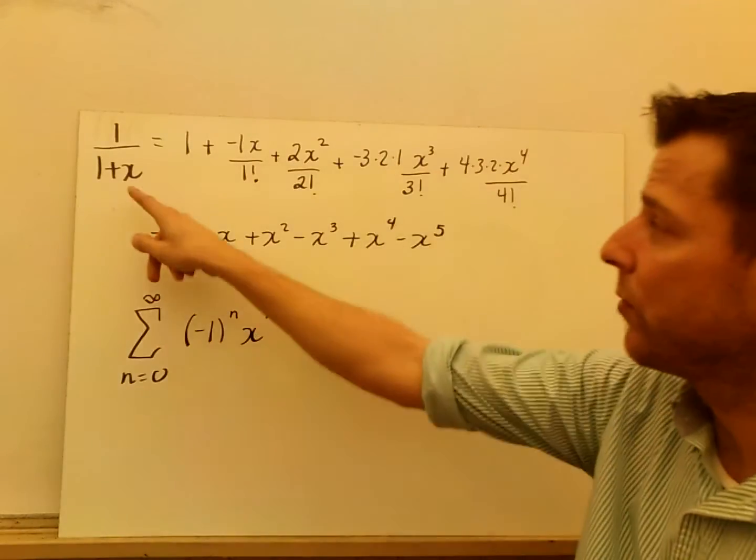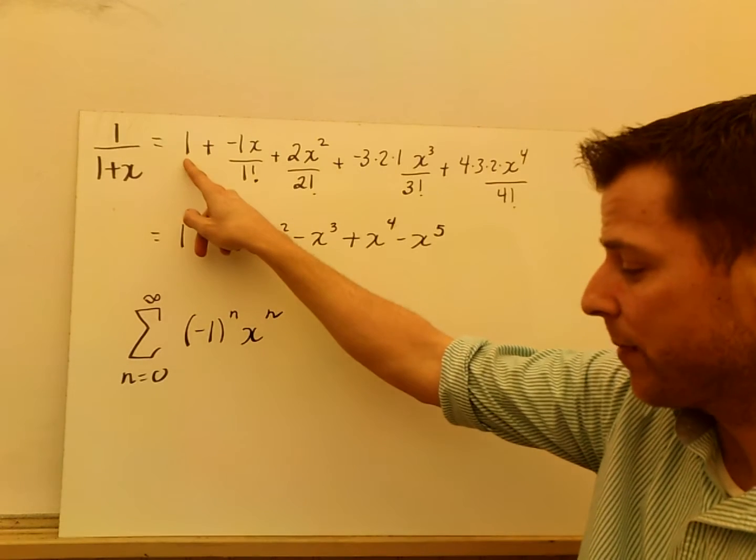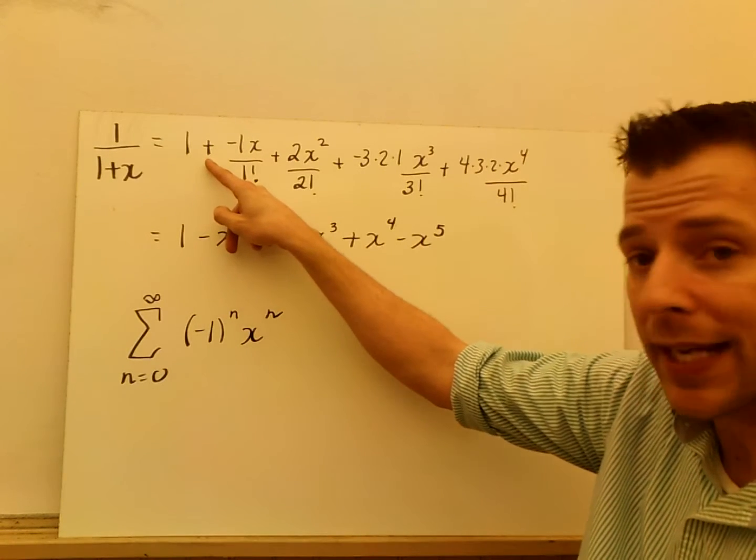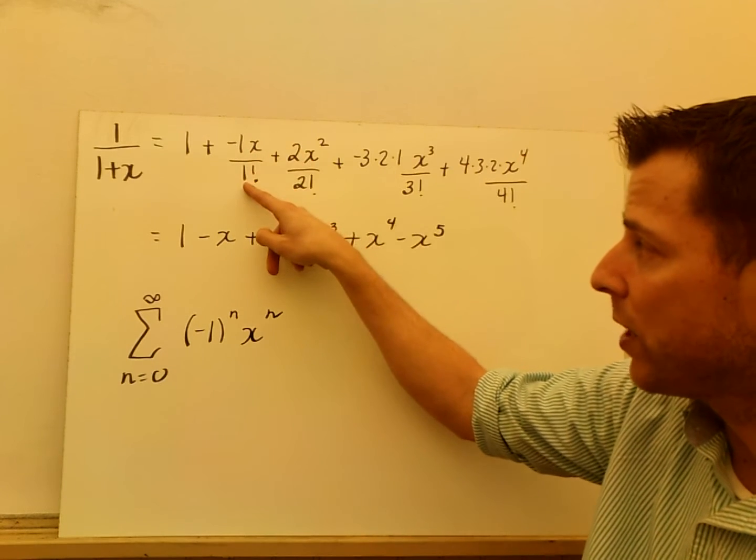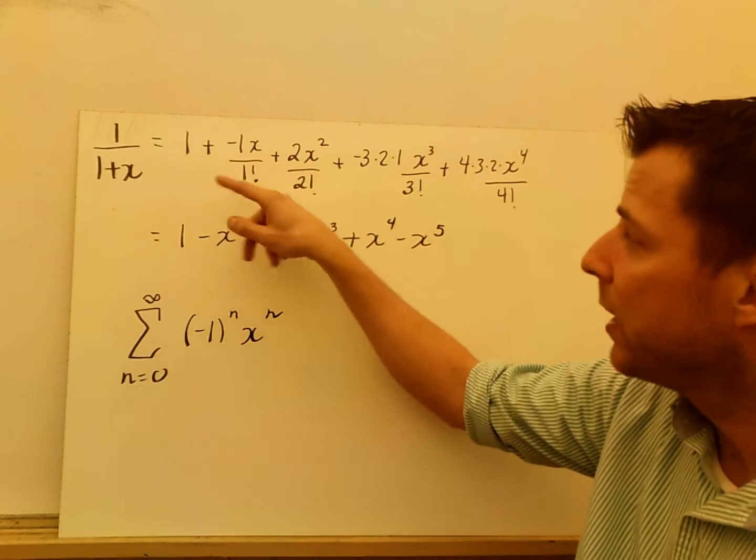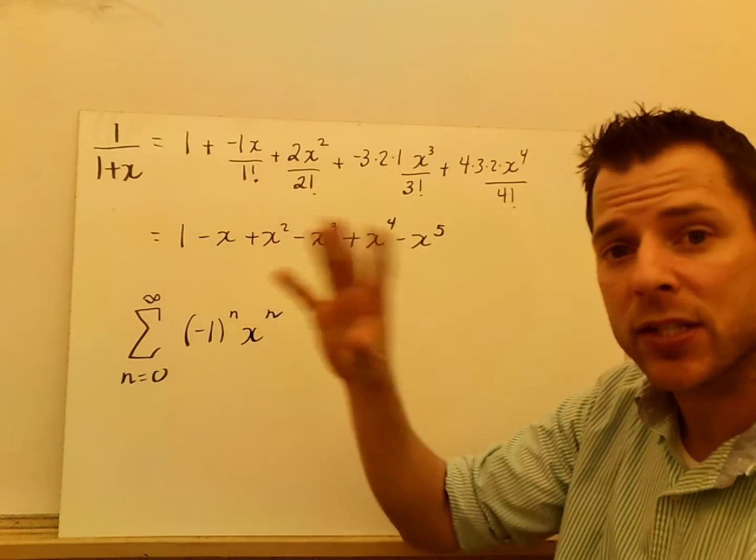So when I go ahead and write the series, I get my first term, f of 0 is 1 plus, second term was negative 1, x minus a to the first over 1 to the first.